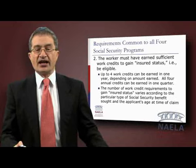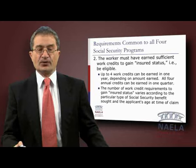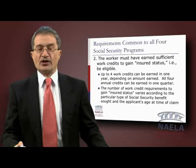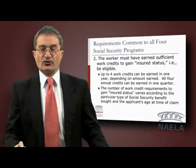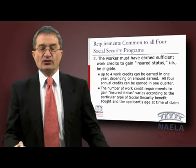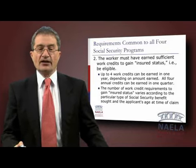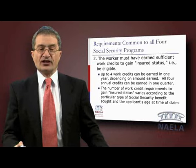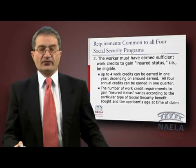The worker must have earned sufficient work credits to gain insured status, that is, to be eligible. Up to four work credits can be earned in one year, depending on the amount earned. All four annual credits can be earned in one quarter. The number of work credit requirements to gain insured status varies according to the particular type of Social Security benefits sought and the applicant's age at the time of claim.